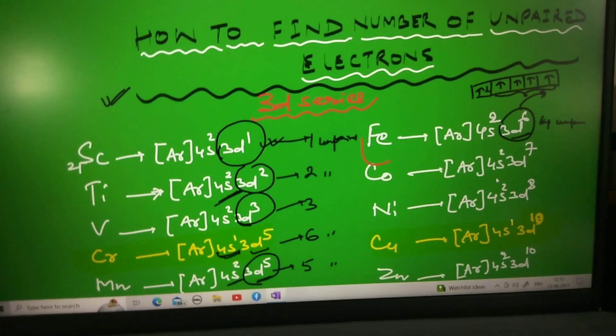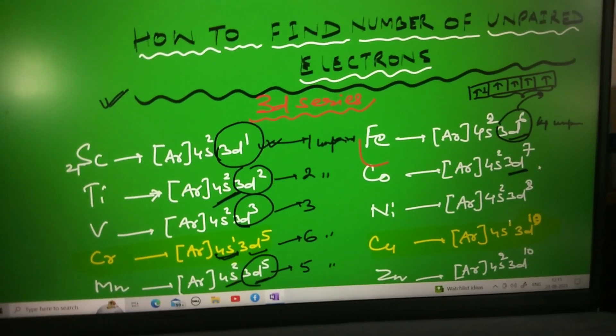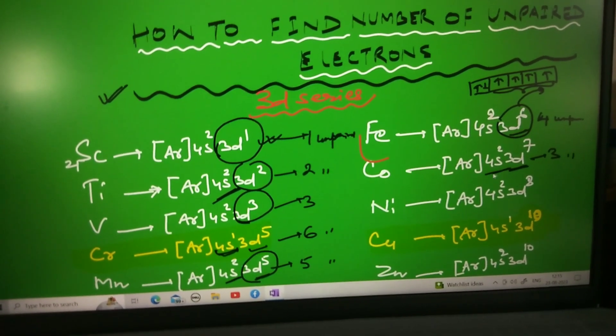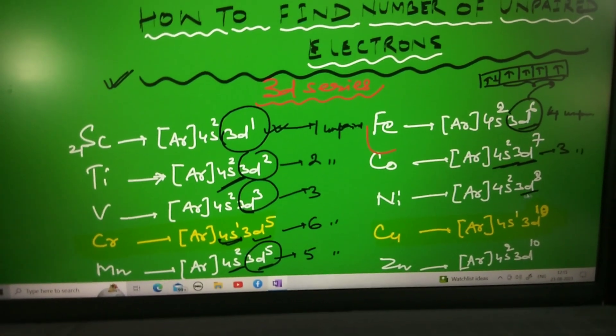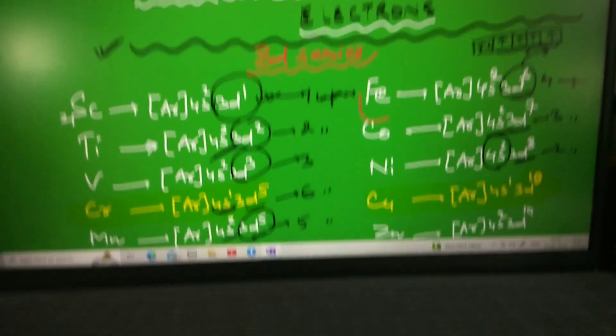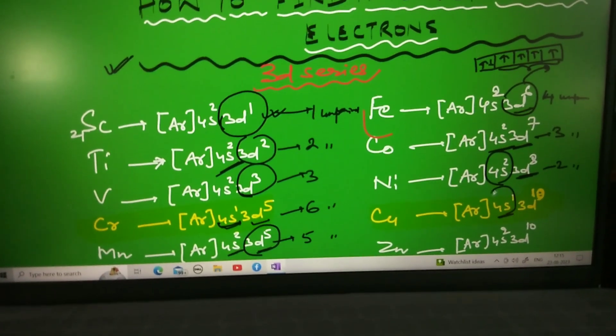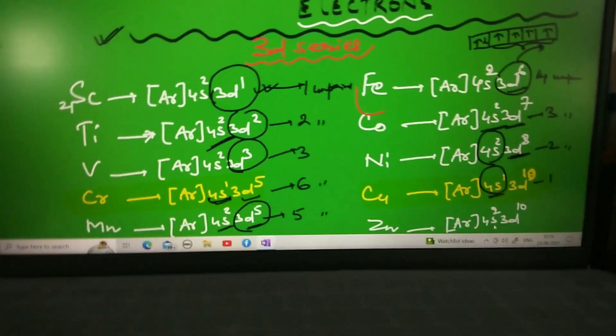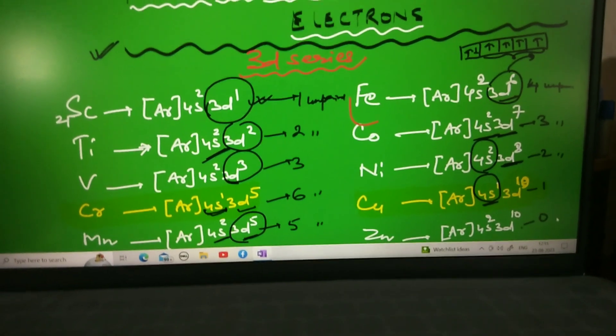Now coming to cobalt. Cobalt has D7 so it has 3 unpaired electrons because 4S2 is filled. Nickel has 3D8, 4S2 is filled, so 3D8 means 2 unpaired electrons. Copper has 1 unpaired electron in 4S1 and zinc has no unpaired electrons, 0 unpaired electrons.